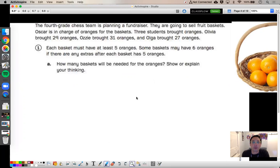Hold up. Wait a minute. What do we know? We know everyone's name starts with an O, which is a huge coincidence, isn't it? We know that Olivia brought 29 oranges. We know that Ozzy brought 31. We know Olga brought 27. Already I'm putting these together in my mind. But before you do that, we need to think, is there anything else we know? We also know that each basket must have at least five oranges. And now I want to highlight this in a different color because this one's super important. Some baskets may have six oranges, emphasis on the may.